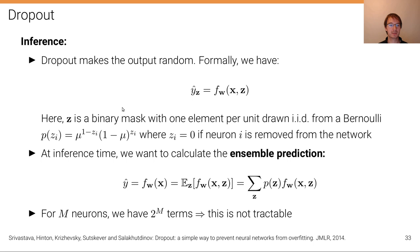So z is a binary mask with one element per unit drawn i.i.d. from a Bernoulli distribution because it's binary, where z_i equals zero if neuron i is removed from the network. Right, so this is the dropout probability.